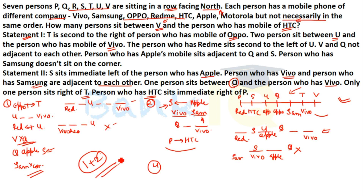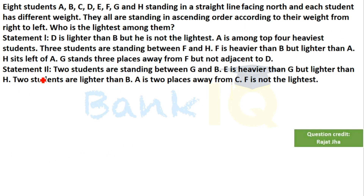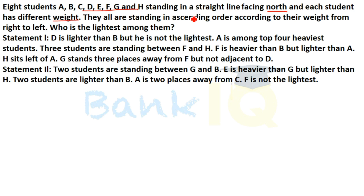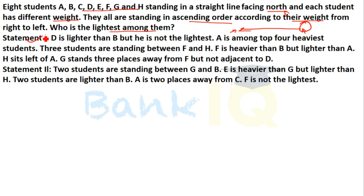Next question: 8 students are standing in a straight line facing north, and each student has a different weight. They are all standing in ascending order according to their weight from right to left — so the rightmost is the lightest. Who is the lightest among them?